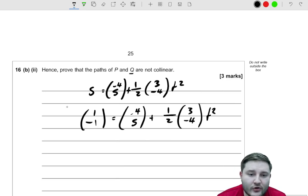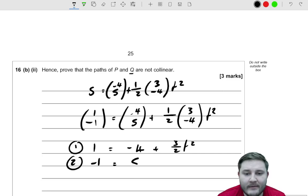So we get one equation, which is 1 is equal to -4 plus 3/2 T squared. And the other equation, by reading the j components, is we get -1 is equal to 5 plus -2 T squared.